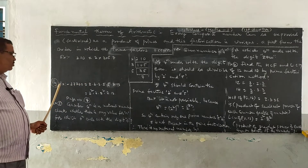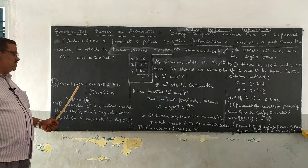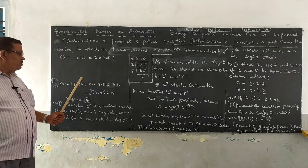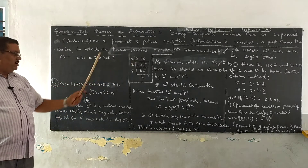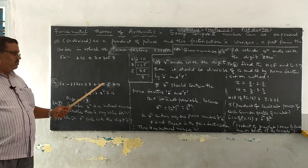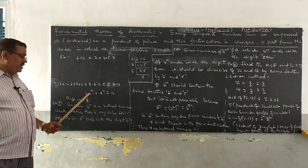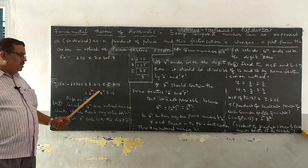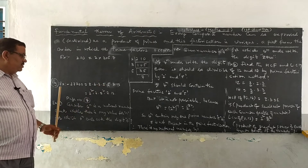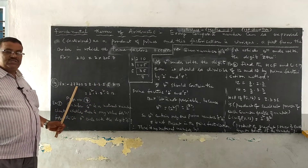Similarly, we have to go for example 2: 27300. How have we factorized it? You can do this in the similar pattern. You get 2 × 2 × 3 × 5 × 5 × 7 × 13, which is nothing but 2² × 3 × 5² × 7 × 13. So these are the prime factors of 27300.